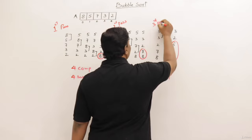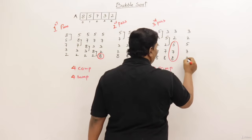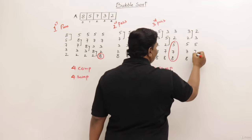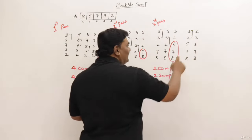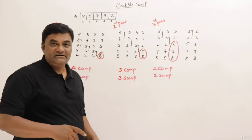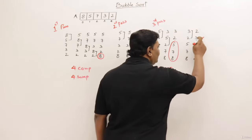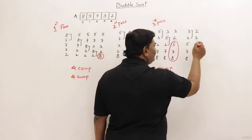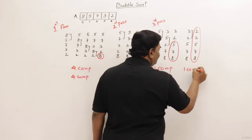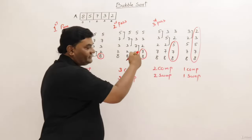Now performing the fourth pass on three, two, five, seven, eight: comparing three and two, three is greater, so we get two, three, five, seven, eight. Comparing three with five is of no use since those are already sorted. At this point four elements are sorted, and with only one element left, it is also sorted — the whole list is sorted. One comparison and one swap were performed.